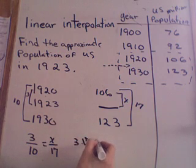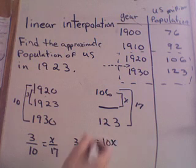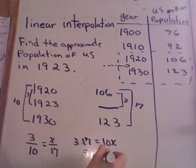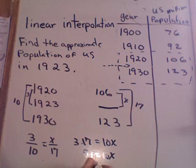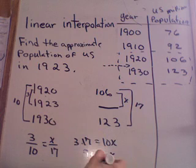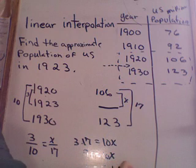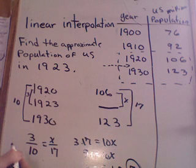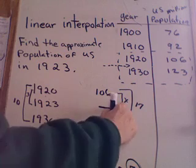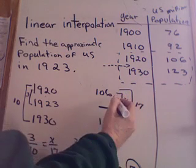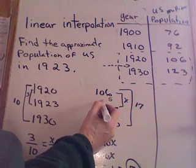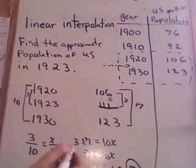Writing an equation from that: 3 times 17 equals 10x. So 51 equals 10x, which means x equals 5.1, approximately 5. To get the answer we're looking for, I add 106 plus 5, which gives 111.